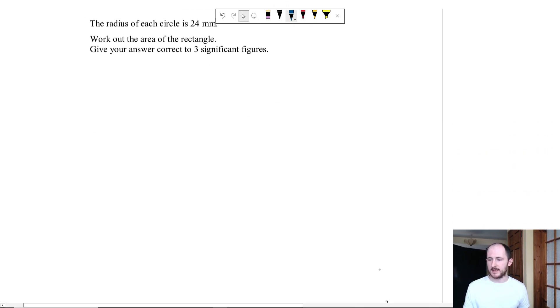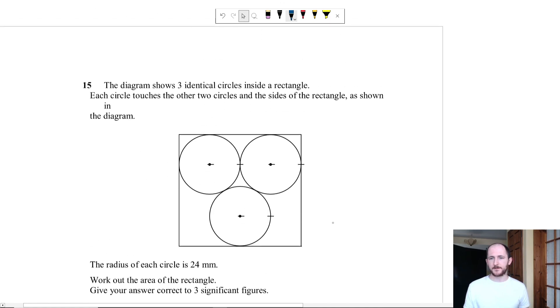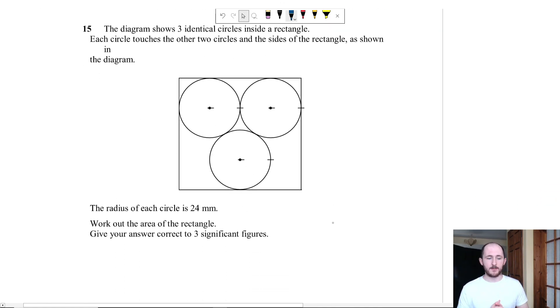So how would I approach this? By the way it's a 4 mark question. The first thing is it says I want to work out the area of a rectangle. So how do I work out the area of a rectangle? Well you need this side the width and you multiply it by whatever you want to call this side the length or you can call it the height if you want.